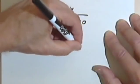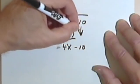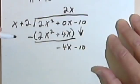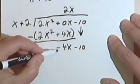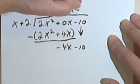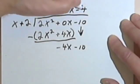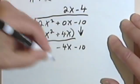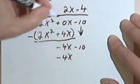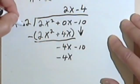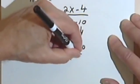I bring down the next number, which is -10, also the next term. And I begin again. x divided into -4x is just -4. -4 times x is -4x. -4 times 2 is -8.